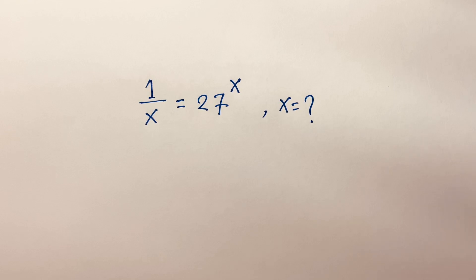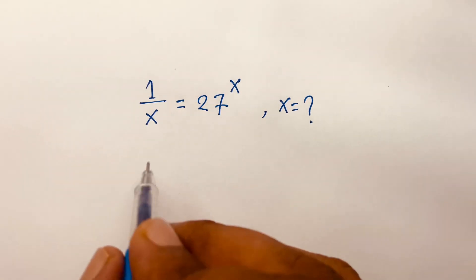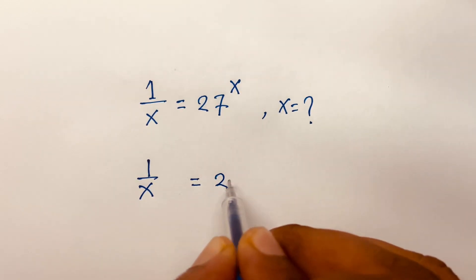How to solve this math Olympiad question: 1 over x is equal to 27 power x. We'll find out what is the value of x. So it will be 1 over x equals 27 power x.